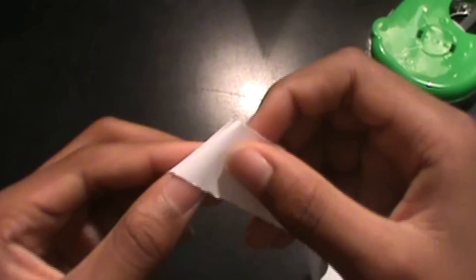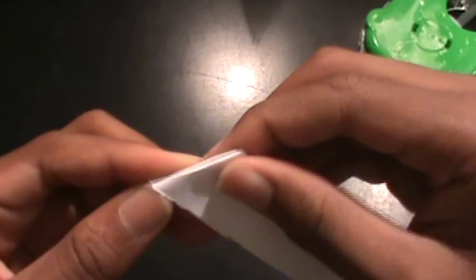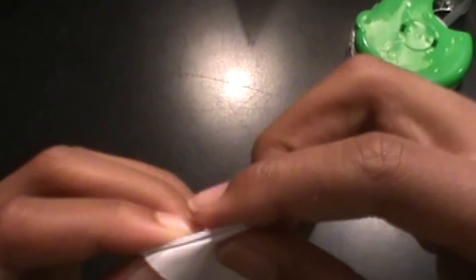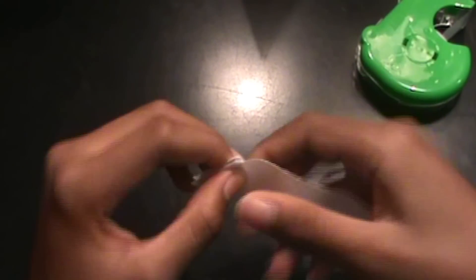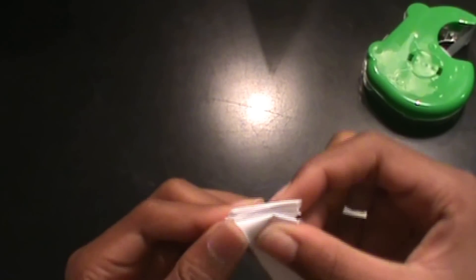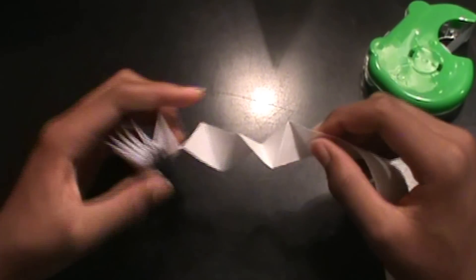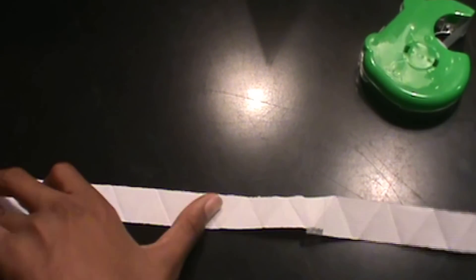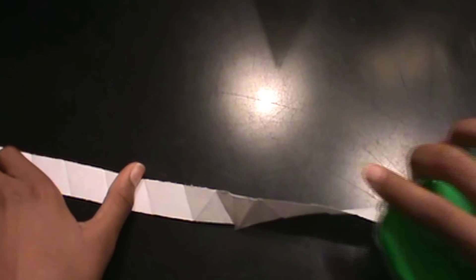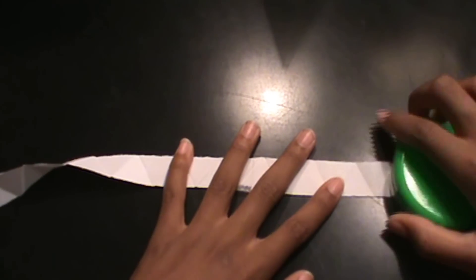Flip your sheet of paper over and you just fold like so, back and forth. And once you think you have about 19 equilateral triangles, you don't really have to do the whole entire sheet.